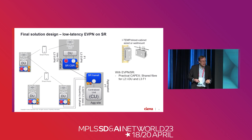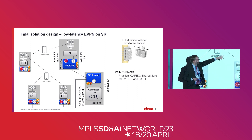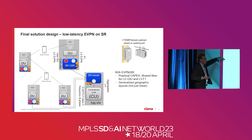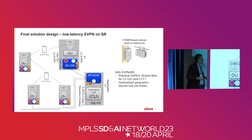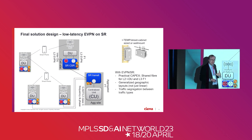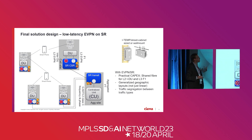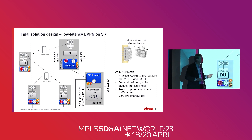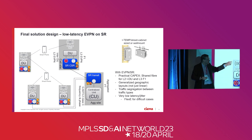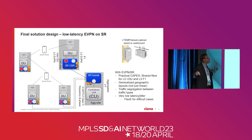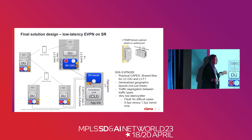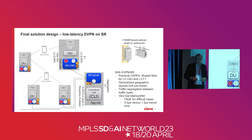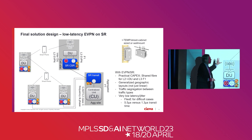To summarize: this provides a practical CAPEX benefit by sharing fiber for the two applications. It generalizes the geographic layout, getting away from that linear configuration and into an arbitrary two- or three-dimensional layout of radios. It allows strong traffic segregation between the very latency-sensitive, jitter-sensitive coordination traffic at L2, as well as the slightly less demanding F1 traffic. It provides very low latency and jitter as you would expect with segment routing. If latency does become a problem, Flexi will cut out about five microseconds per switch — with three switches here, that's effectively giving you an extra three kilometers of reach.